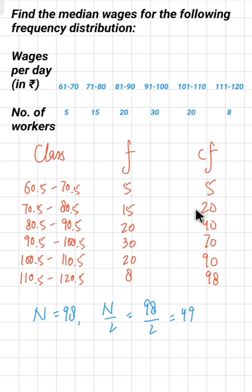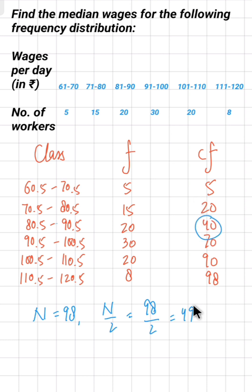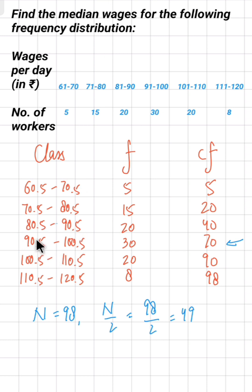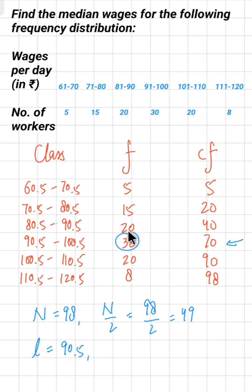Now we need to find the median class. Check each cumulative frequency to see which is the first one greater than or equal to 49. The first CF is 5 — no. The second is 20 — no. The third is 40 — no. The fourth is 70 — yes. So that class is the median class. Its lower limit, 90.5, is known as L, so L is 90.5.